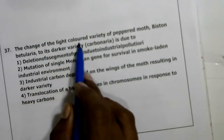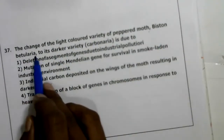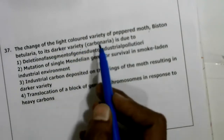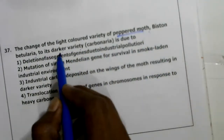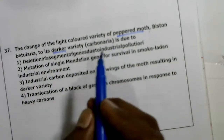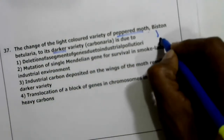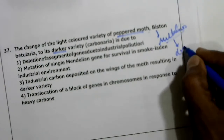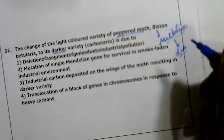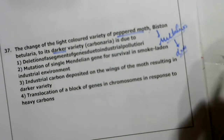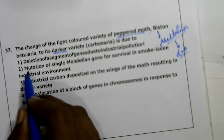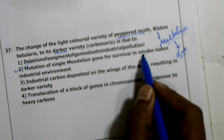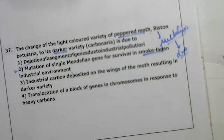Thirty-seventh question: changes of light-colored variety of peppered moth (Biston betularia) to its darker variety is due to — in industrial melanism, the dark variety appears. The main scientific reason is mutation of a single gene — these organisms show dark color due to a single Mendelian gene mutation. The correct answer is mutation of a single Mendelian gene for survival in smoke-laden industrial environments — fourth option is correct.